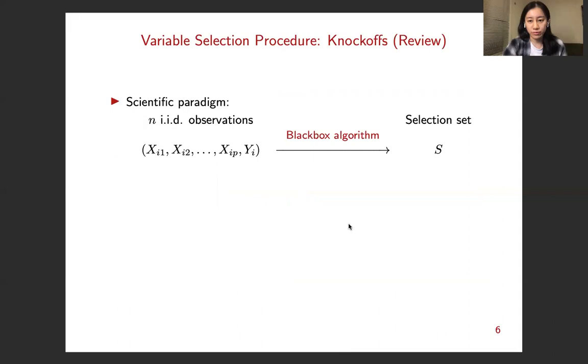To start, let me give a brief introduction to the knockoffs framework. It is a variable selection procedure that our procedure is going to be based on. Let's first recall the scientific paradigm. Suppose a scientist has a response in mind. She goes out, does experiments, collects data, and she wants to find out which variables are significantly associated with the response. So suppose she has n IID observations. She would apply a black box algorithm to the data set and the algorithm gives her a selection set. But the problem is that not every black box algorithm comes with error control guarantee.